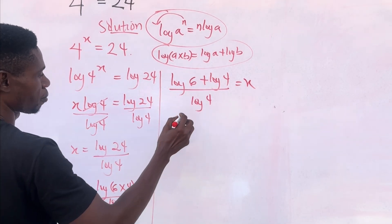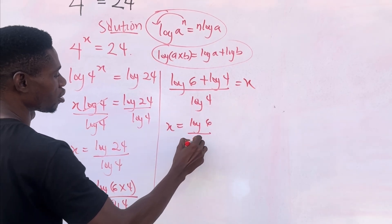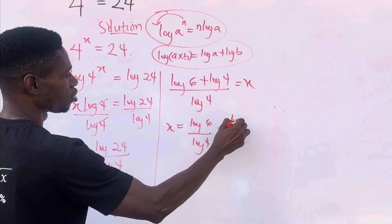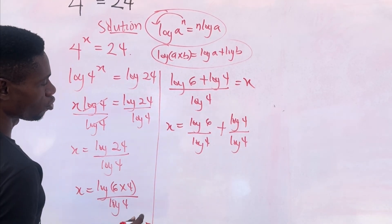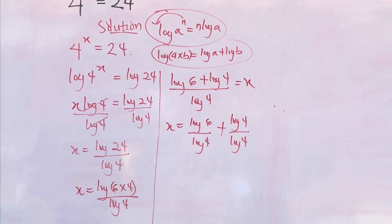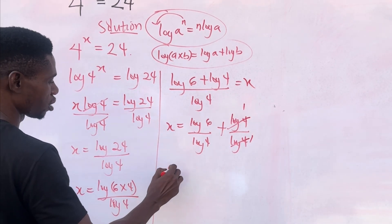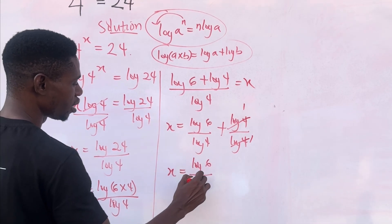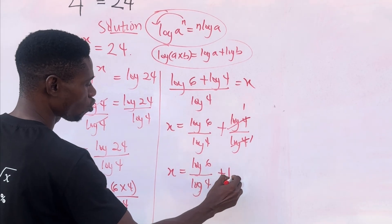Now let's share this. So x equal to log 6 over log 4 plus log 4 over log 4. We just separated the fraction. So this here one, this here one. So this can give us x equal to log 6 divided by log 4 plus 1.